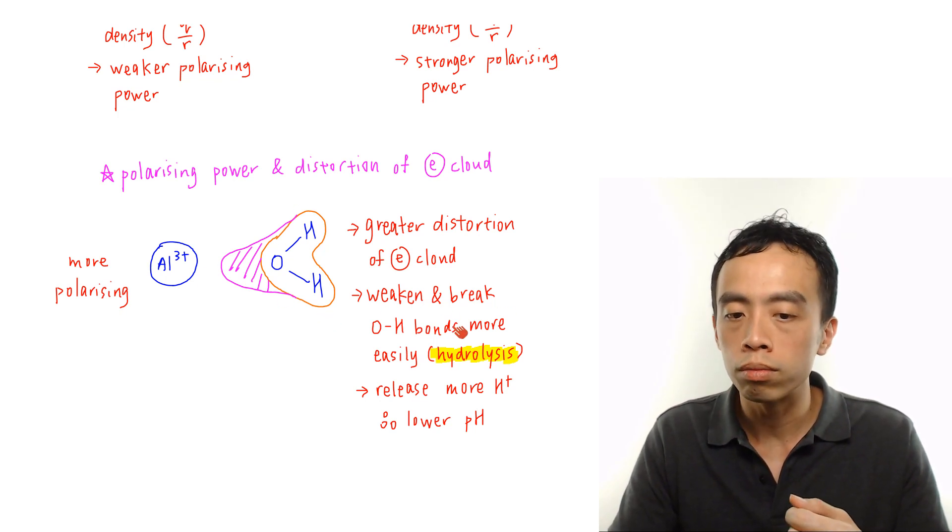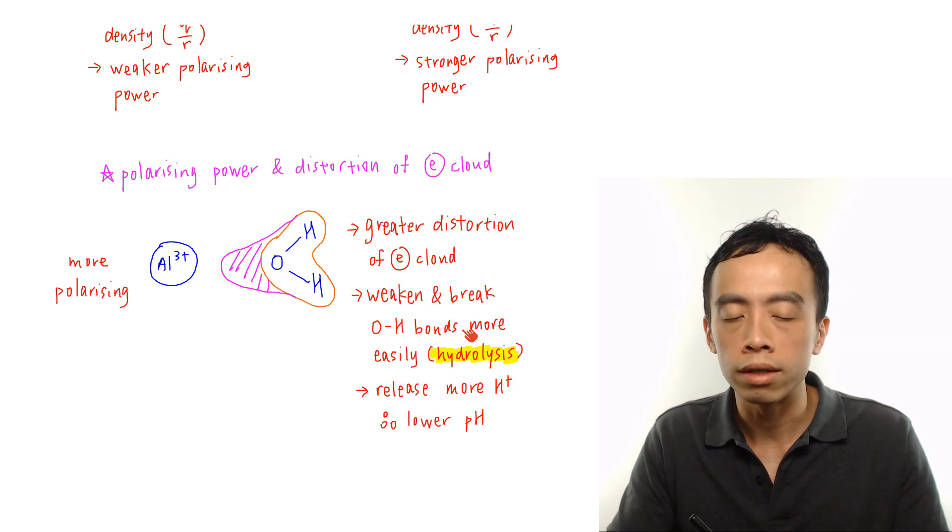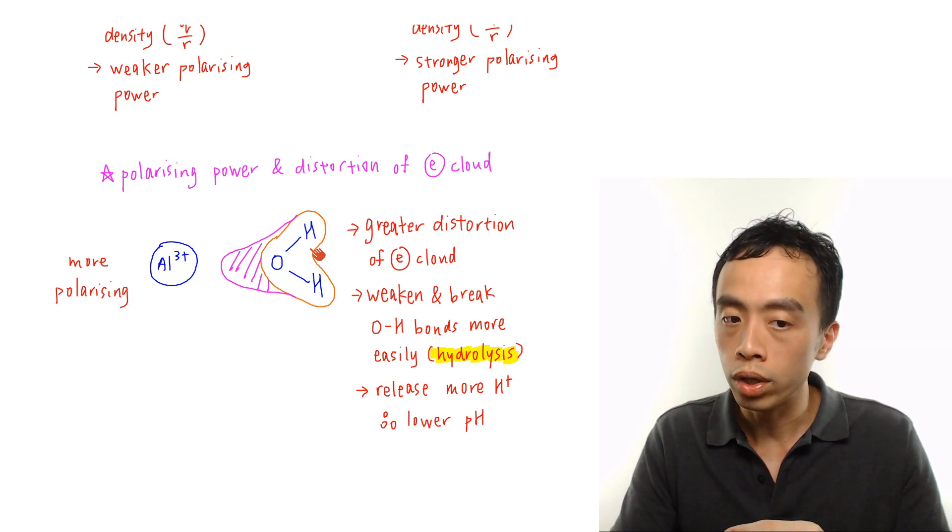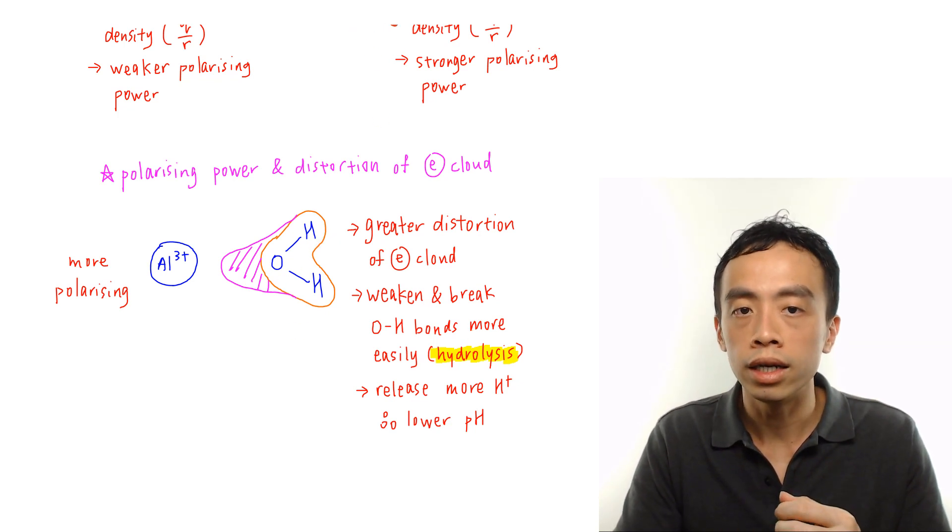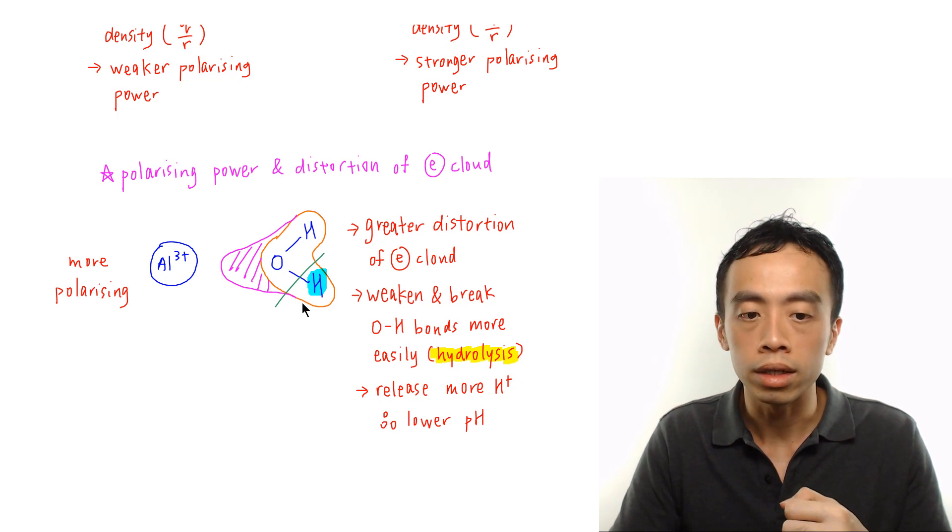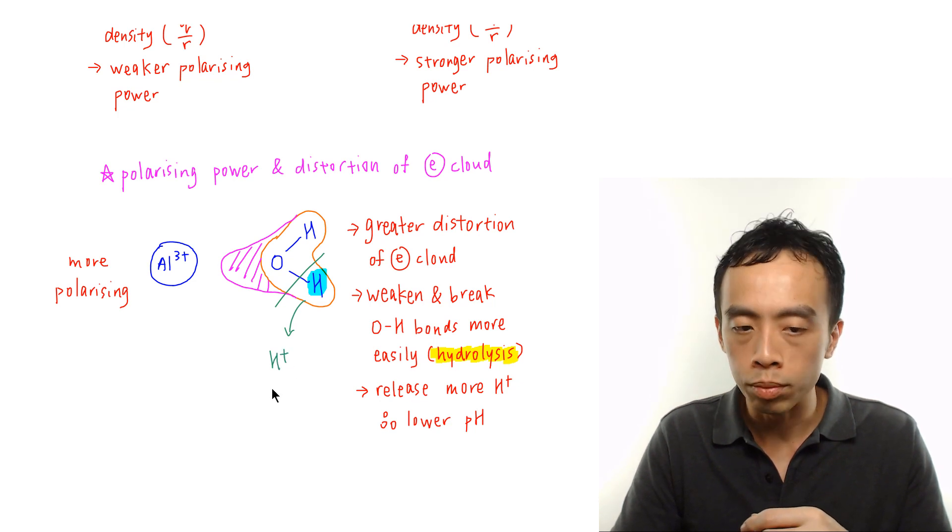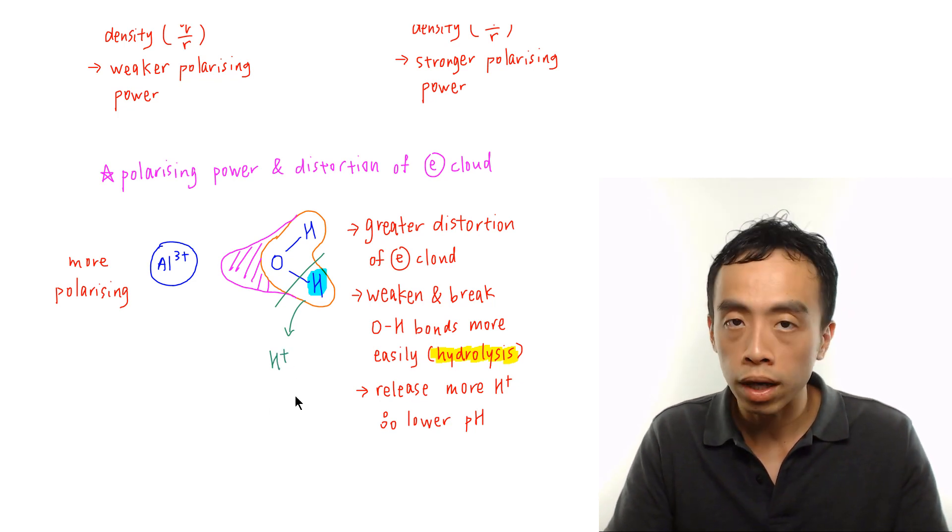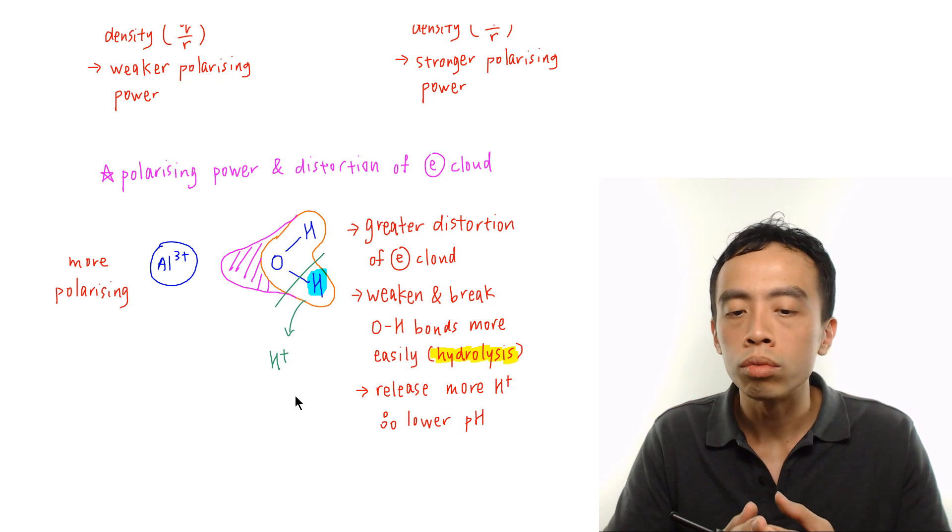So once these bonds inside here are weaker then it is easier to break the OH bond then what happens is this hydrogen will come out or it will be kicked out as H+. So this H will be released as H+. And it is because of the release of this H+ that causes the solution to be acidic.